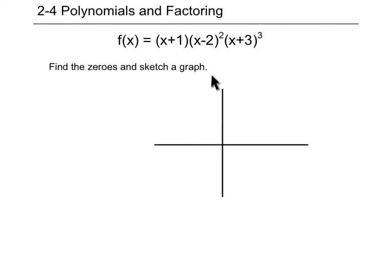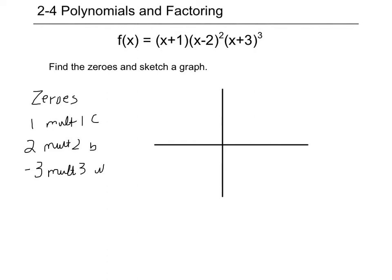The instructions say to find the zeros and sketch a graph. If we list the zeros: negative one with a multiplicity of one, which is a cross; two with a multiplicity of two, which is a bounce; and negative three with a multiplicity of three, which is a wiggle. On the graph, we mark negative three as a wiggle, one as a cross, and two as a bounce.